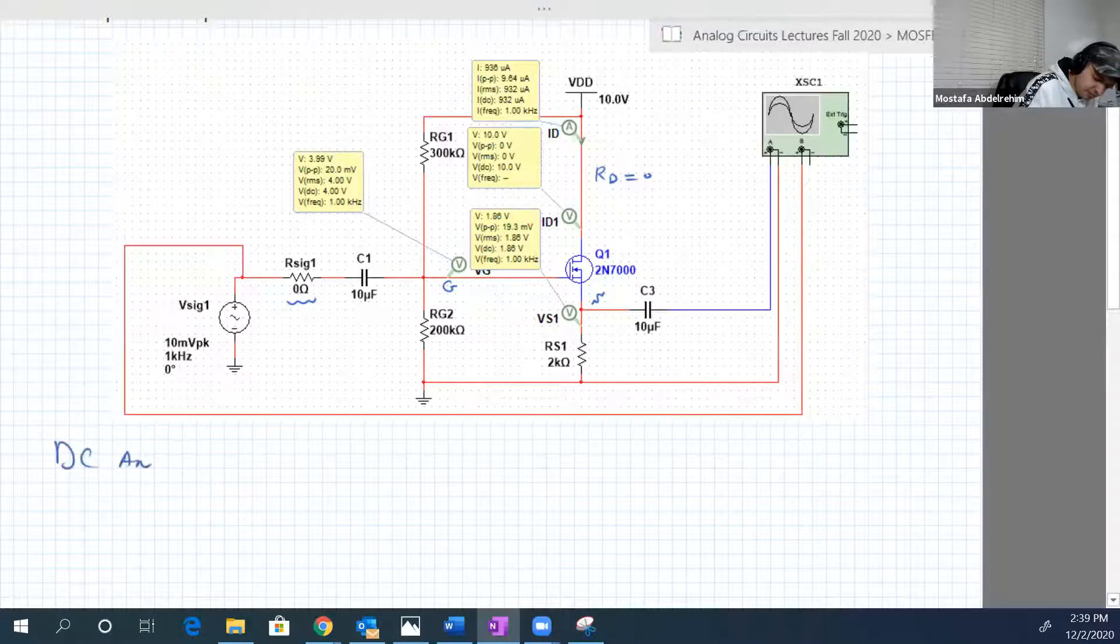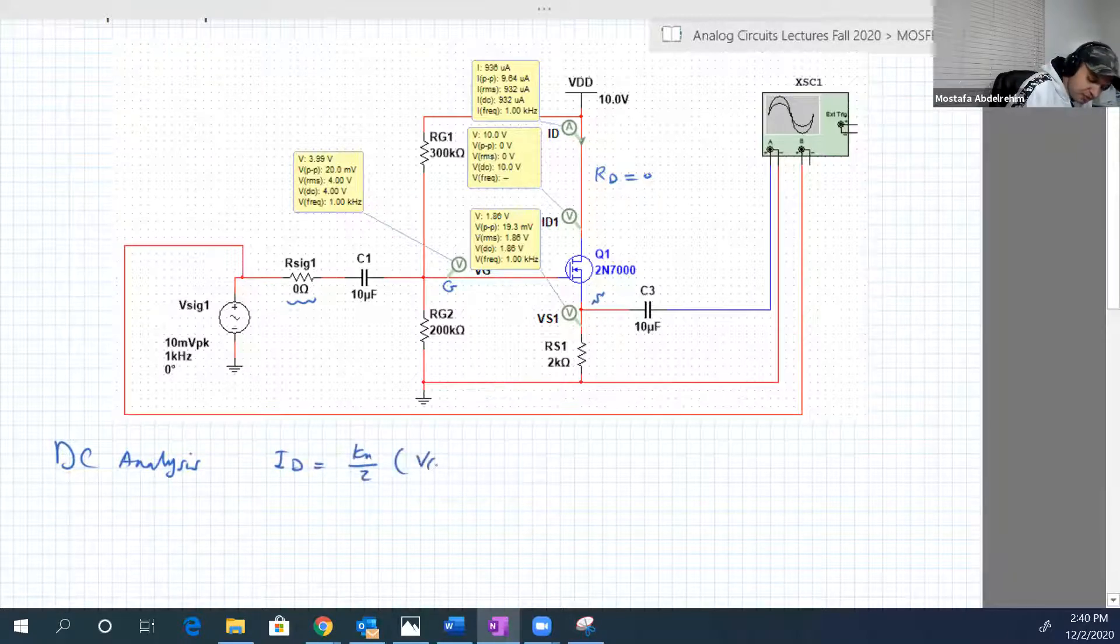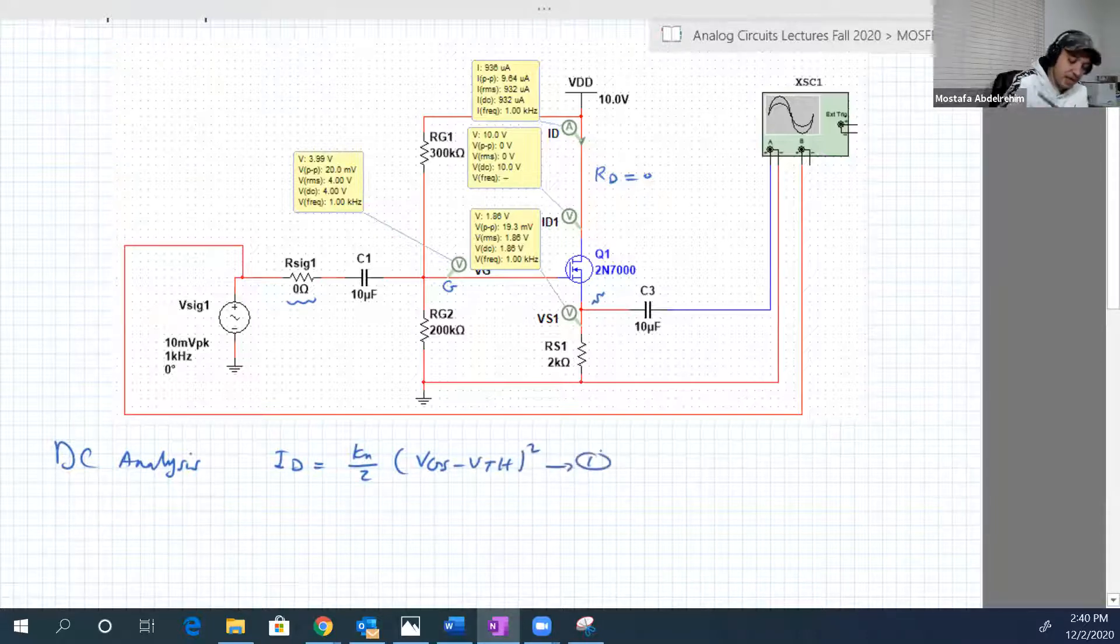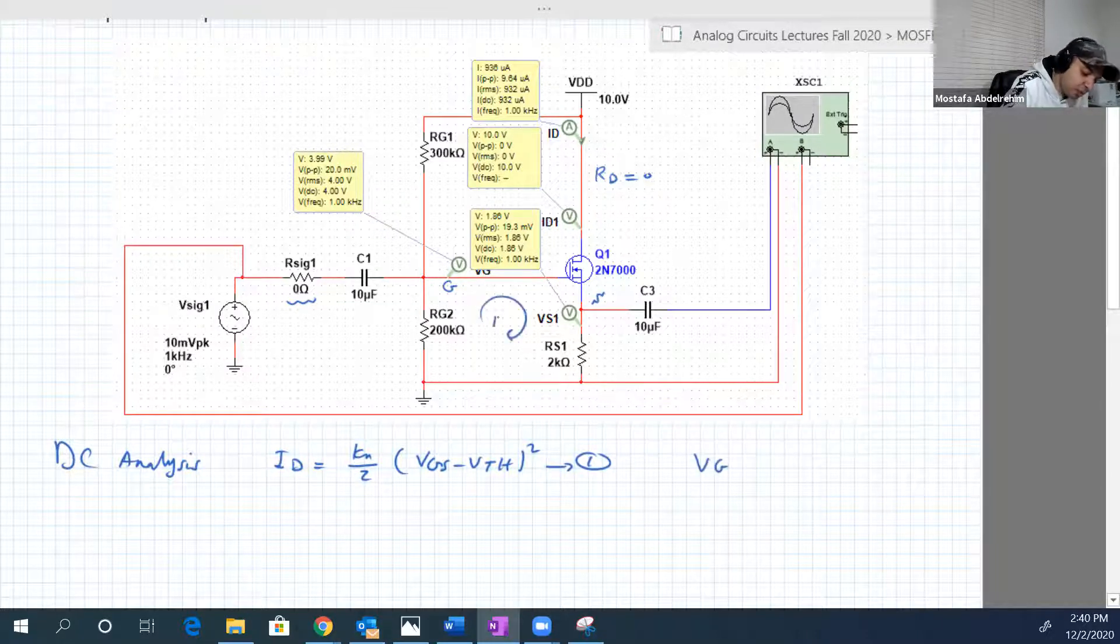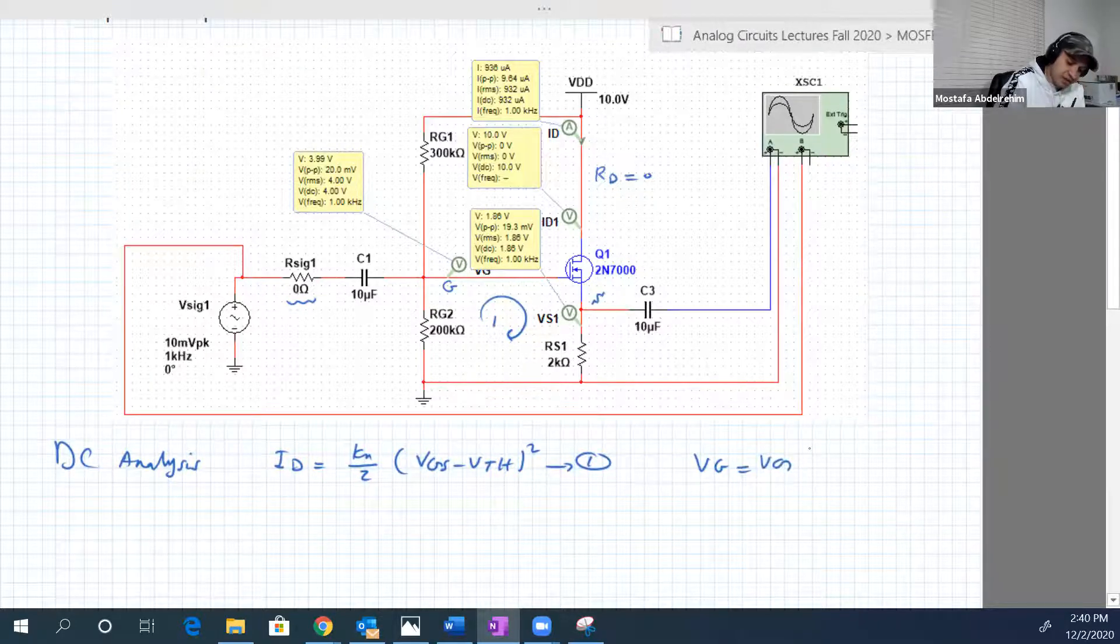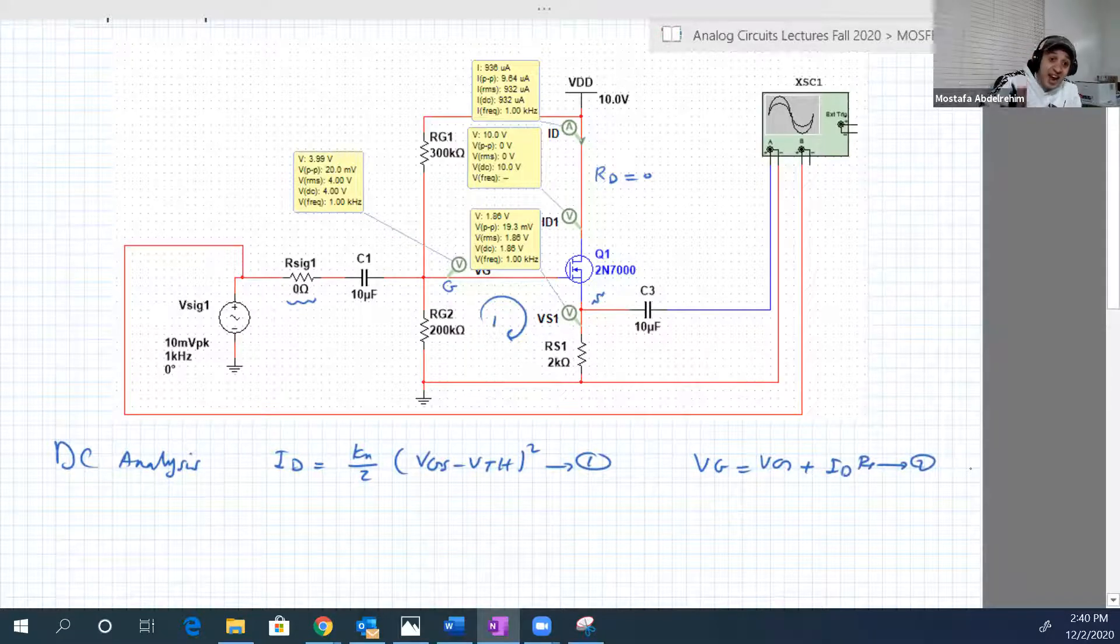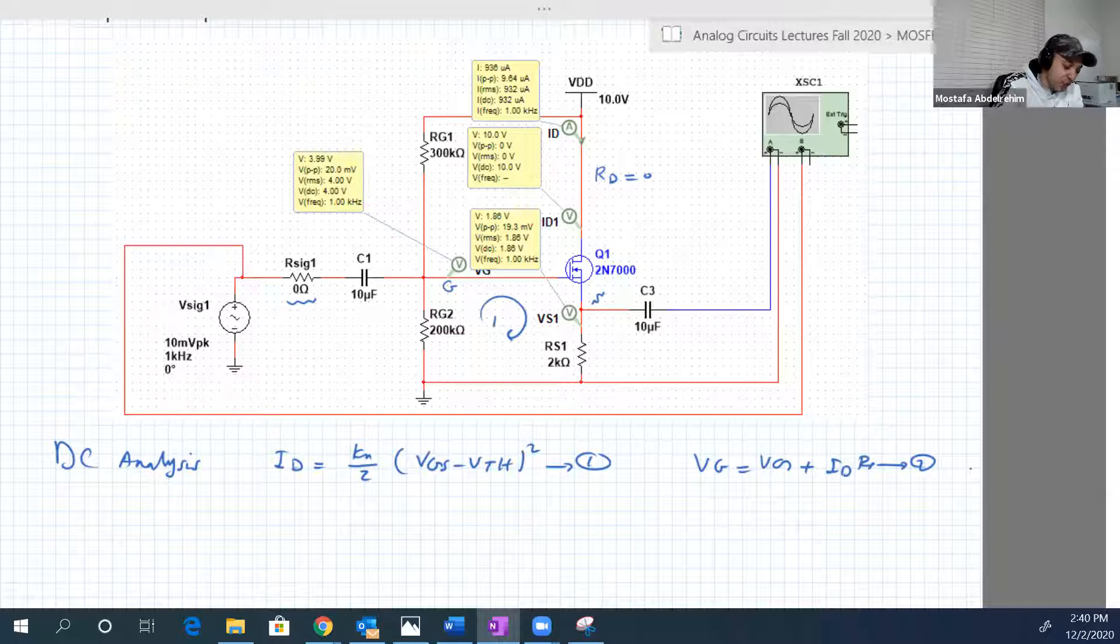So the DC analysis. Our first equation, that is ID equal to KN over 2, VGS minus V threshold squared. And our second equation is that VG equal to VGS plus IDRS. What we notice here, these are exactly the same two equations of experiment 1.